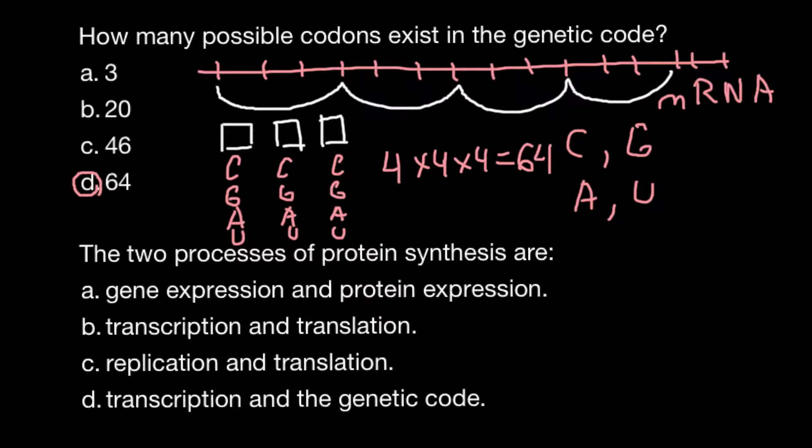So the second question: the two processes of protein synthesis are? Answer A: gene expression and protein expression. Answer B: transcription and translation. Answer C: replication and translation. And answer D: transcription and the genetic code.